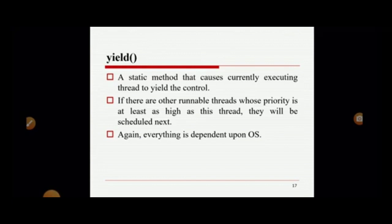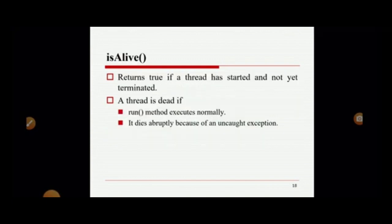The yield() method is a static method that causes the currently executing thread to yield control. If there are other runnable threads whose priority is at least as high as this thread, they will be scheduled next. All scheduling concepts and priority decisions depend on the operating system. The isAlive() method returns true if the thread has started and not yet terminated; if the thread is dead, it returns false.